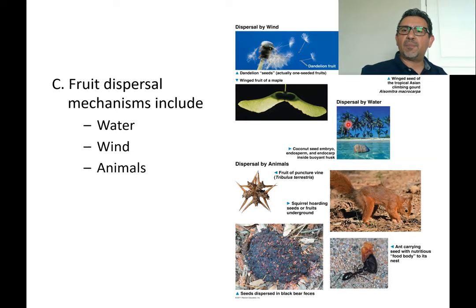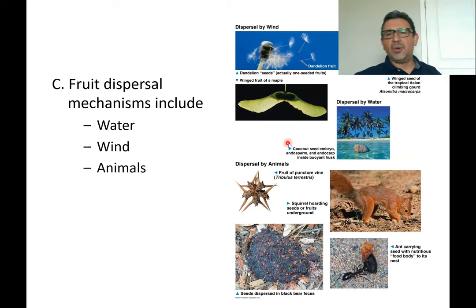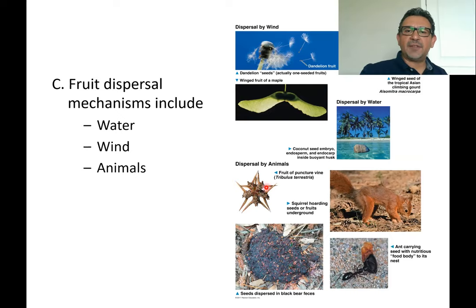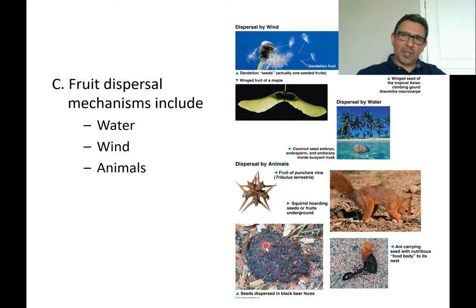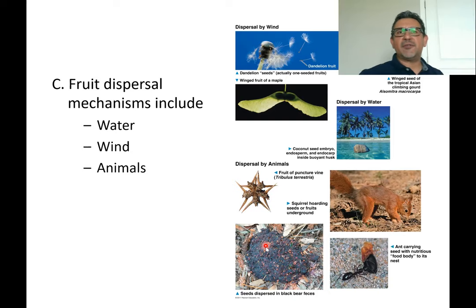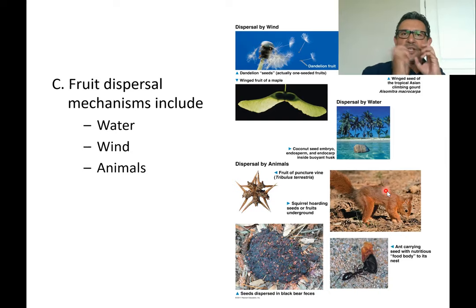Coconut palms drop coconuts that can be carried all over the world by ocean currents. Some fruits have thorns that painfully attach to the fur or skin of animals, carrying them to new locations. Other seeds travel through the digestive tract of an animal, and when the animal defecates in a different location, the seeds are deposited away from the parent plant.